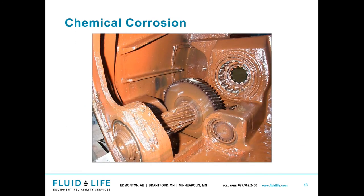Chemical corrosion can happen a few different ways. It can happen from water. It can also happen when you have additives that do not work well with the metallurgy of your components. A good example would be if you have a worm gear with a brass component — a softer metal. EP additives typically have an active sulfur in them and that reacts to the copper in brass and would leach it out.